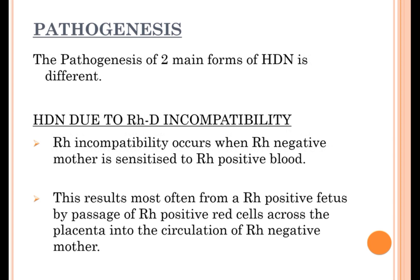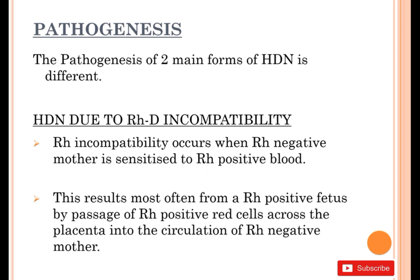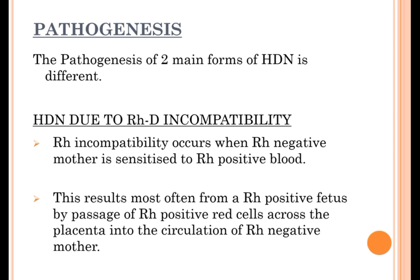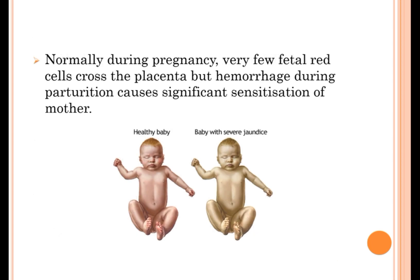Pathogenesis. The pathogenesis of the two main forms of HDN is different. HDN due to RHD incompatibility occurs when an RH negative mother is sensitized to RH positive blood. This results most often from an RH positive fetus, by passage of RH positive red cells across the placenta into the circulation of the RH negative mother. Normally during pregnancy, very few fetal red cells cross the placenta, but hemorrhage during parturition causes significant sensitization of the mother.